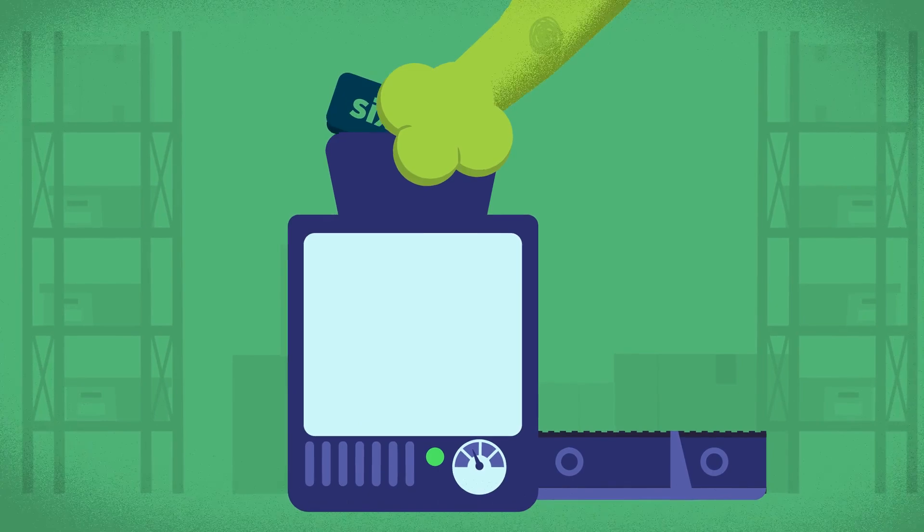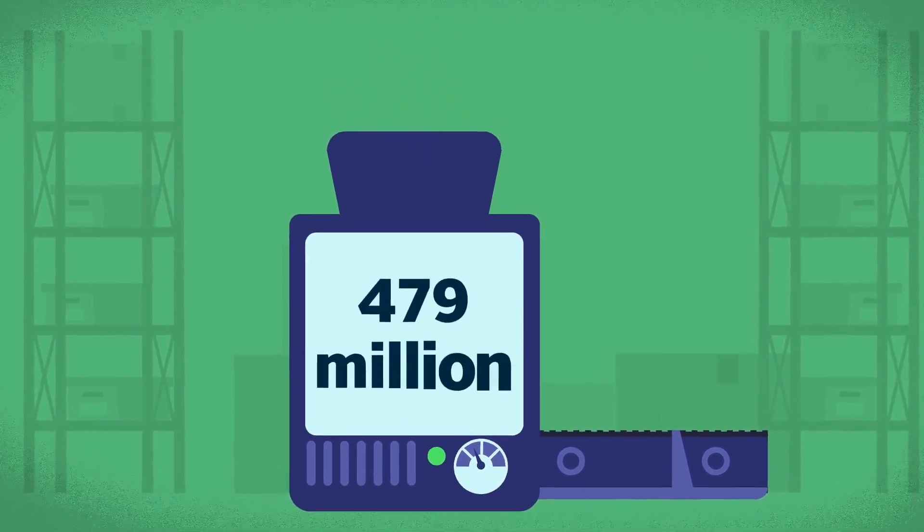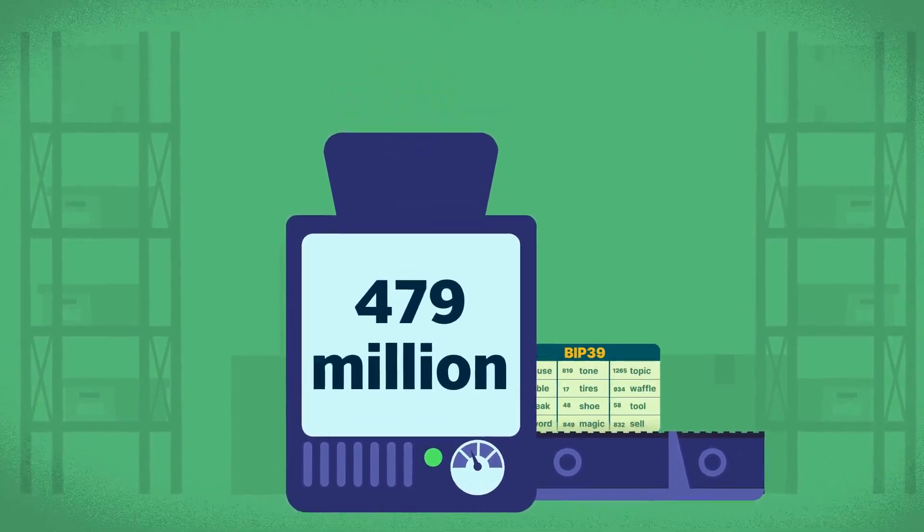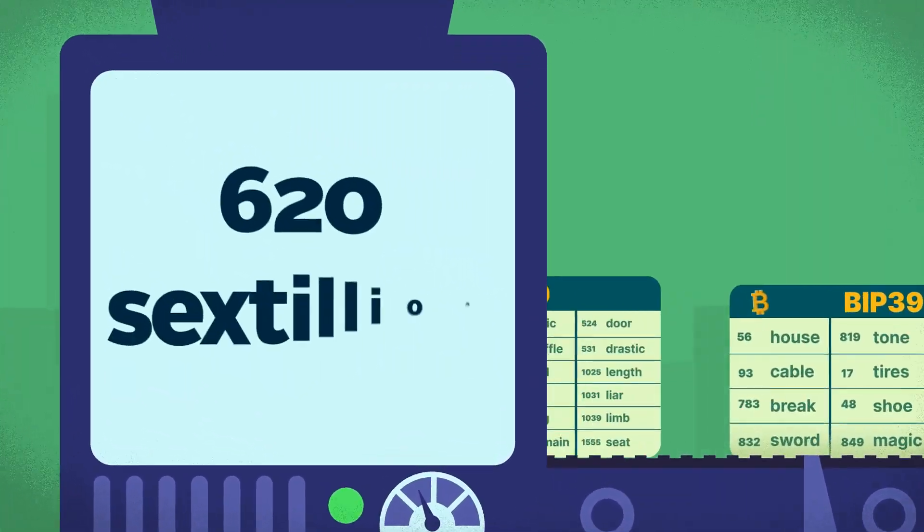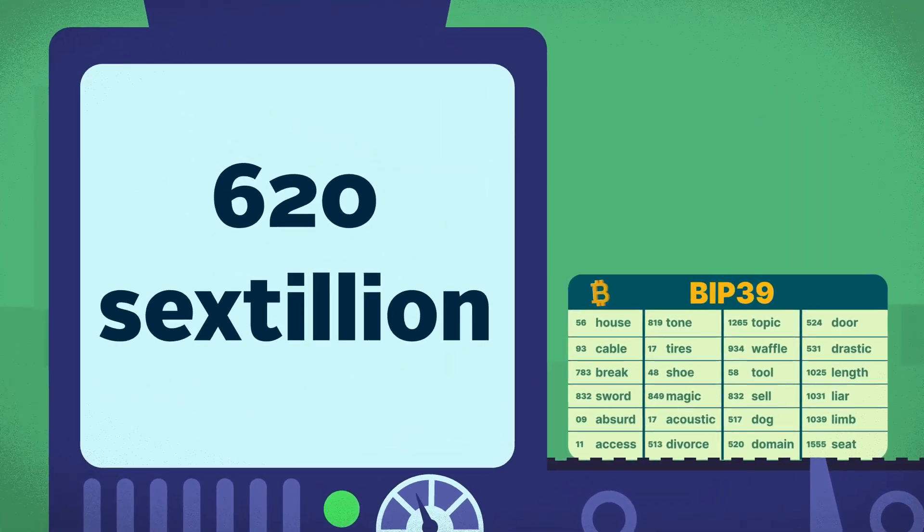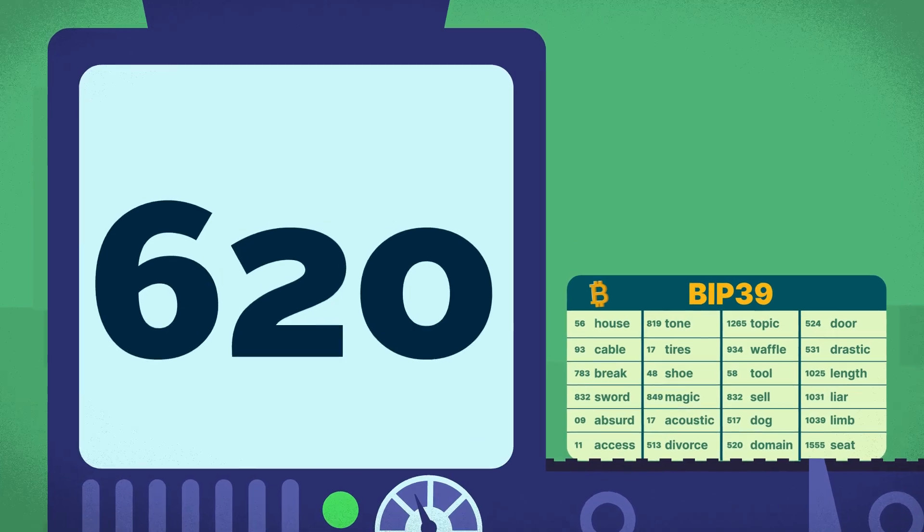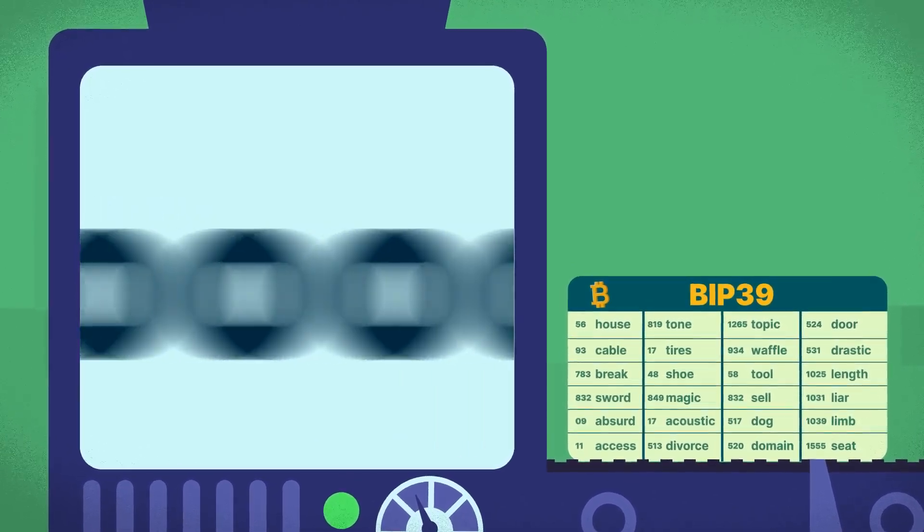For a 12-word seed phrase, that's roughly 479 million possible combinations, while for 24 words, it'd be about 620 sextillion combinations, 62 followed by 21 zeros.